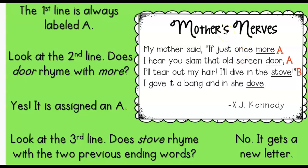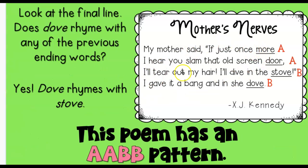You can probably already see what words rhyme. We go to the end of line one — that's always going to be labeled A. Look at the end of line two: door. That rhymes with more, doesn't it? Because it does, we're going to label that A. So right now we have an AA pattern. Now look at the third line: stove. Does that rhyme with door or more? No, it's a new word. So that's why we're going to label that B — stove does not rhyme with these words.